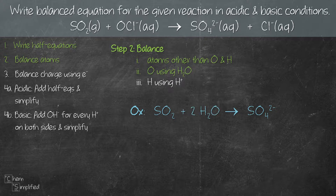Since we've added 2H₂O, we now have 4H on the left hand side and no H on the right hand side, so we're going to add 4H⁺ on the right hand side. Following the sequence when balancing the atoms makes it very easy and fast — otherwise it takes longer than necessary. Now that we're done with the oxidation equation, let's move on to the reduction equation.